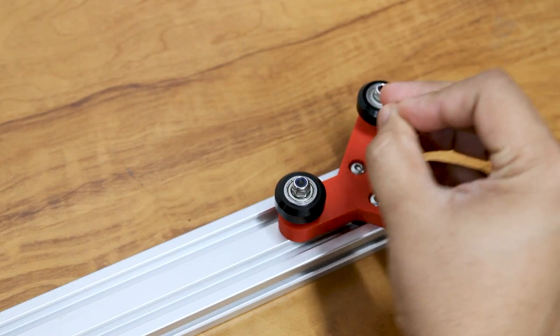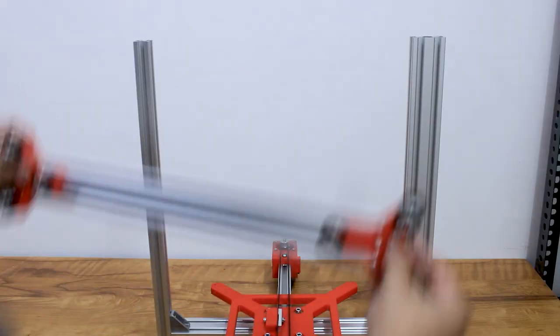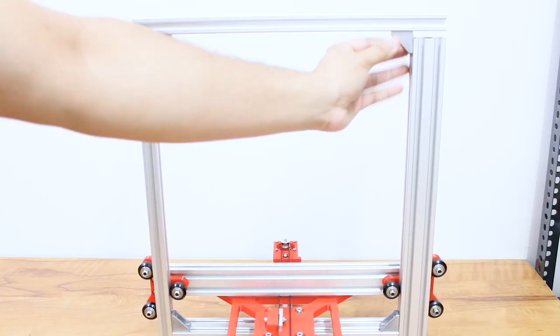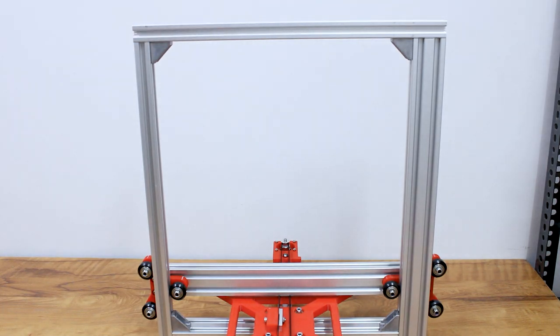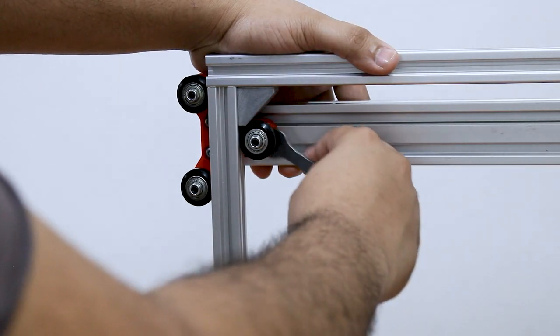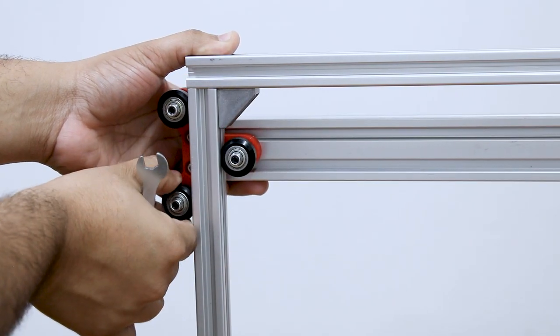Tighten the remaining bolts and insert it again. Place the top profile back. Turn the eccentric spacers again to have a firm grip on the profile.